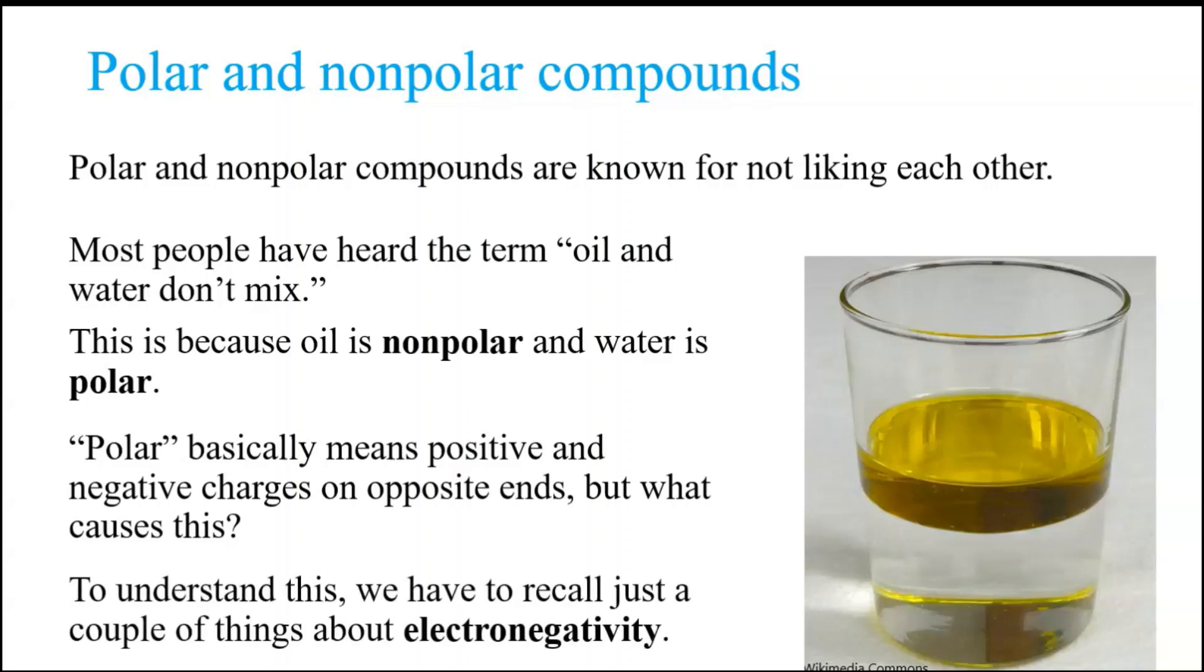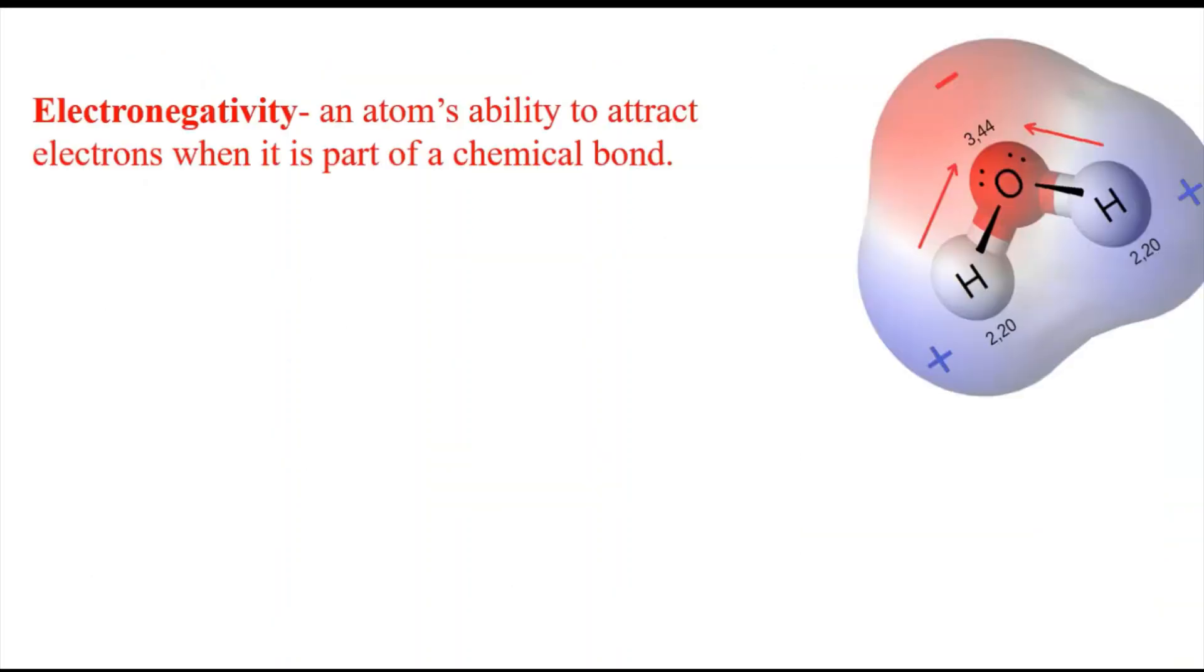It has to do with electronegativity. We need to go back in time a little bit to when we covered electronegativity and talk about how all this happens. So electronegativity is an atom's ability to attract electrons when it's part of a chemical bond. There are various ways you can say this, but that's a pretty concise way.